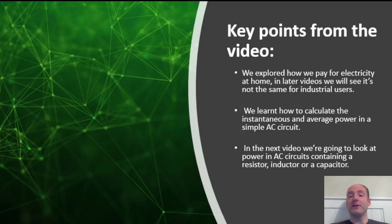So just to summarize this video, we explored how we pay for electricity at home, and in later videos we'll see how that's actually not the same as industrial users pay for electricity. We also learned how to calculate the instantaneous and average power in a simple AC circuit. In the next video we're going to take a look at power in AC circuits in more detail and consider specific components like resistors, inductors, and capacitors.